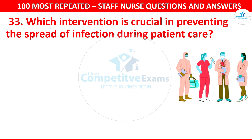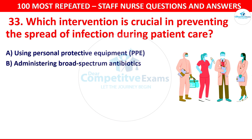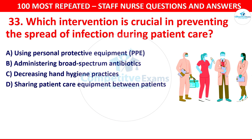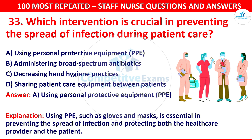Question number 33: Which intervention is crucial in preventing the spread of infection during patient care? Options include using personal protective equipment (PPE), administering broad-spectrum antibiotics, decreasing hand hygiene practice, or sharing patient care equipment between patients. The correct answer is using personal protective equipment (PPE). Using PPE such as gloves and masks is essential in preventing the spread of infection and protecting both the healthcare provider and the patients.